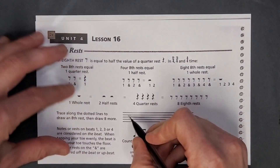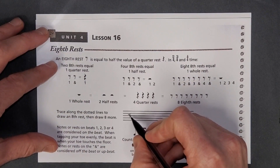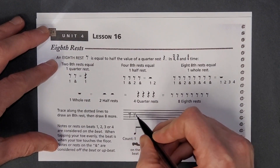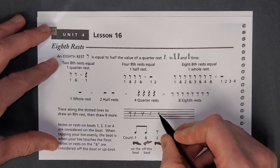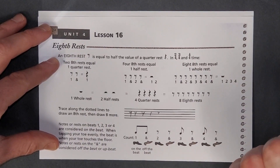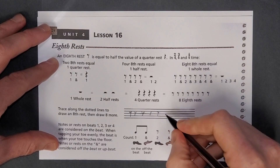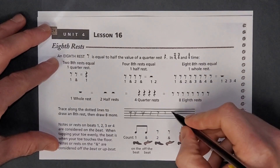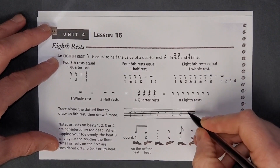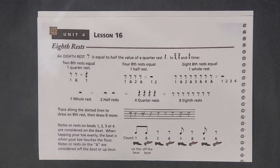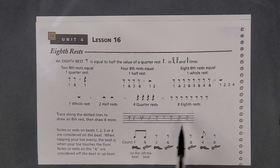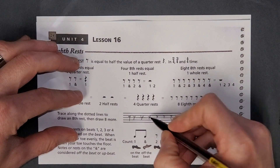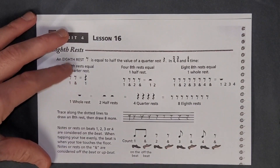Trace along the dotted lines to draw an eighth rest, then draw eight more. I kind of think of it as like a weird seven — just like a little curly Q seven. They don't have to look perfect. People will know what you're doing if they see something that looks like most of these.